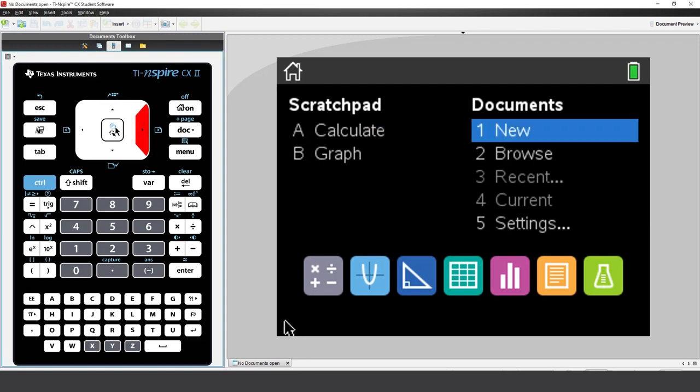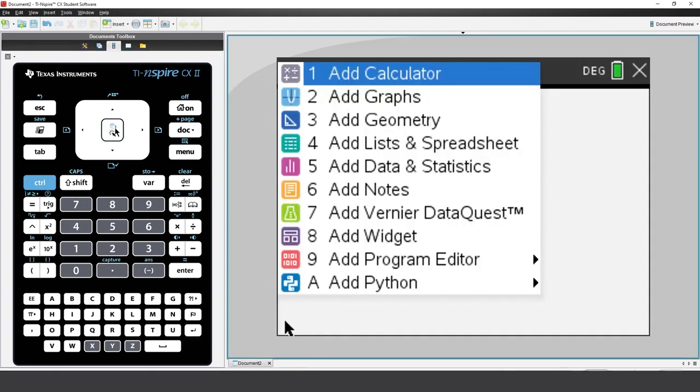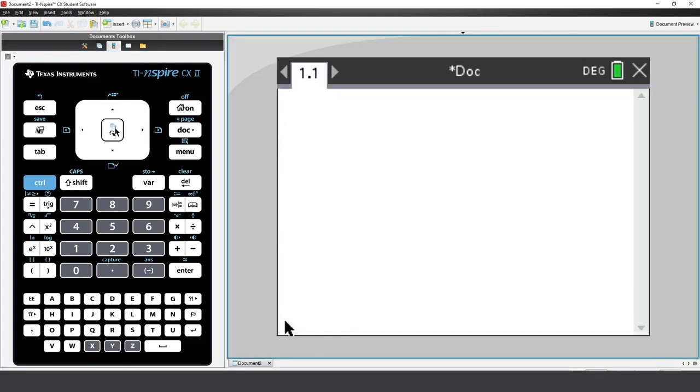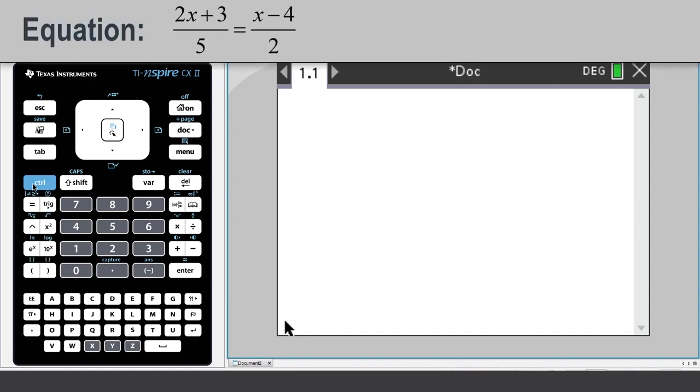Let's start by creating a new document. Insert a calculator application. Suppose you have a simple equation to solve. You could navigate through the menus to find the solve command, or you could just type your equation in: 2x plus 3 over 5 equals x minus 4 over 2.